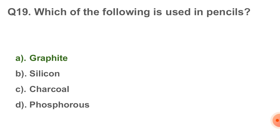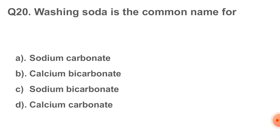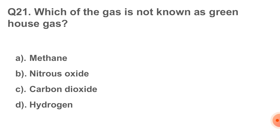Question number 20: washing soda is the common name for. The correct answer is option number A, that is sodium carbonate. Question number 21: which of the following gas is not known as a greenhouse gas? The correct answer is option number D, that is hydrogen.